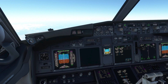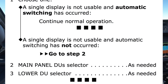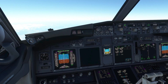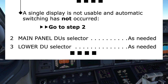Looking at the displays, the navigation display did not switch, so the second conditional path is selected. Had the display automatically switched, the note read to continue normal operation, and the four black boxes would have indicated the checklist had been completed. However, we are directed by the second path to go to Step 2. Step 2 has us use the main panel DU selector as needed, and Step 3 has us use the lower DU selector as needed. So let's take a look at the operation of those selectors and see what they do.